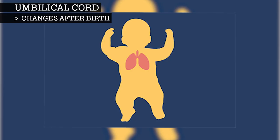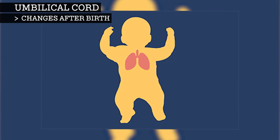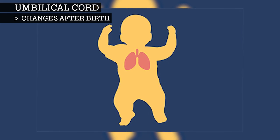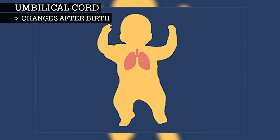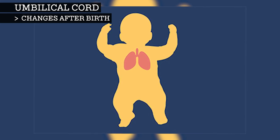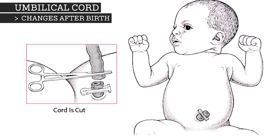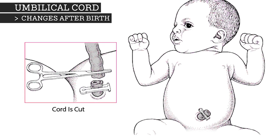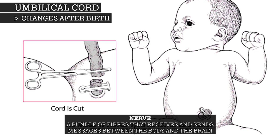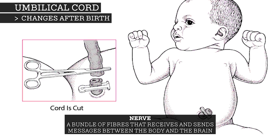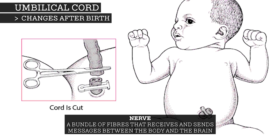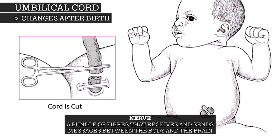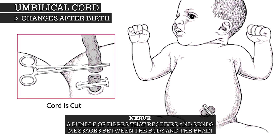With their first breaths of air, the baby's lungs will start to expand so that the blood can now oxygenate by passing through the lungs. Clamping is followed by cutting the cord, which is painless due to the absence of nerves. The cord is extremely tough, like thick sinew, and so cutting it requires a suitably sharp instrument.